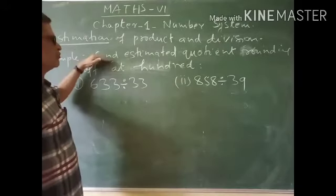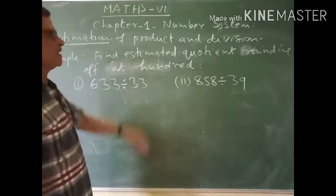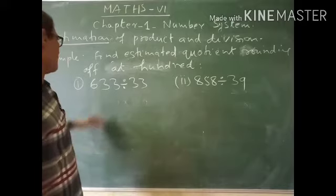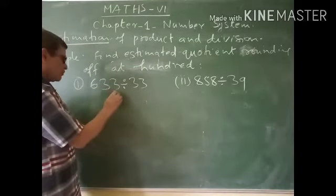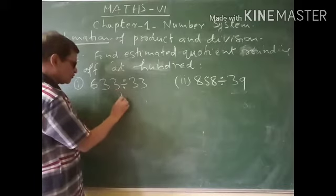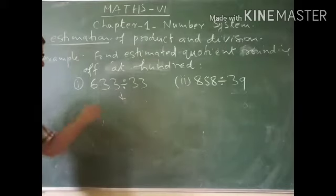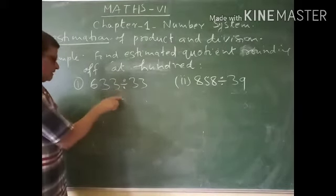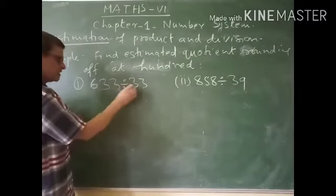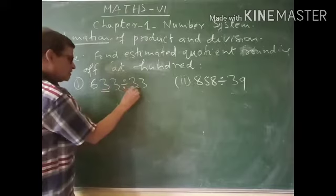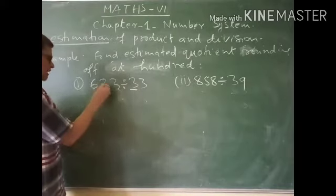Now we are going to find out the estimated quotient, rounding up at 100. The process is the same here also. So first of all, we round these numbers at the tens place.